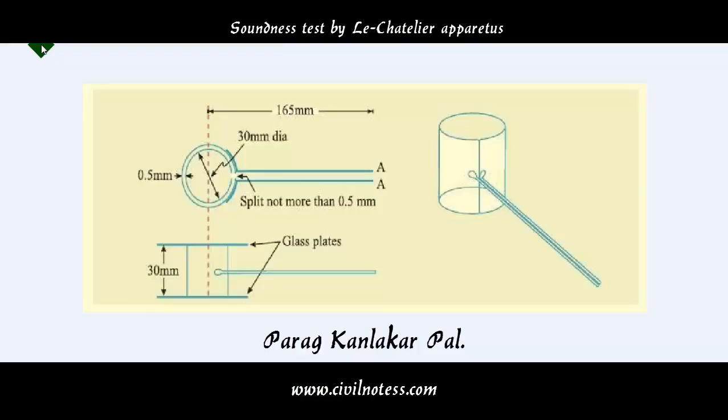We remove the mold from the water, cool it down, and measure the distance between the indicator points. The difference between these two measurements represents the expansion of cement. This must not exceed 10mm for ordinary cement.